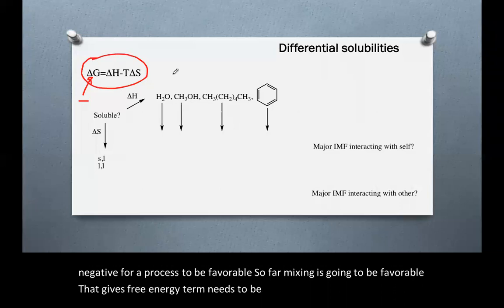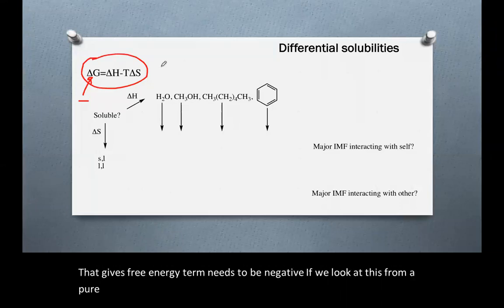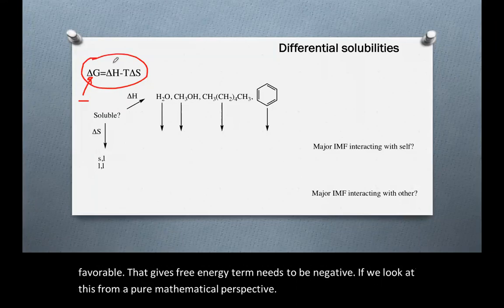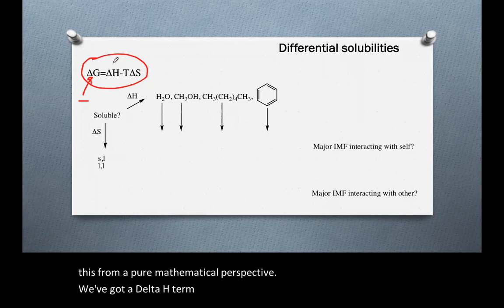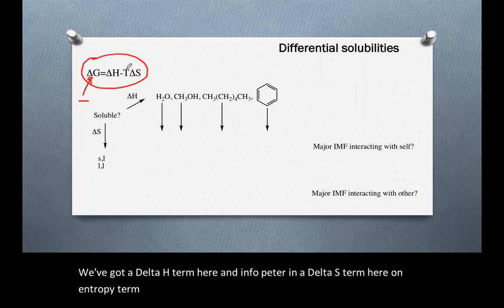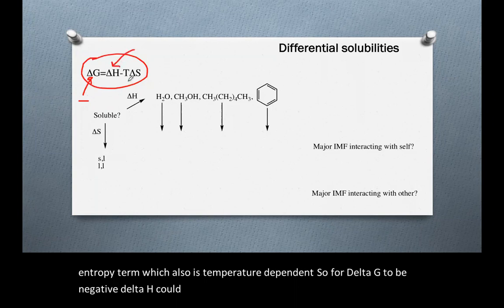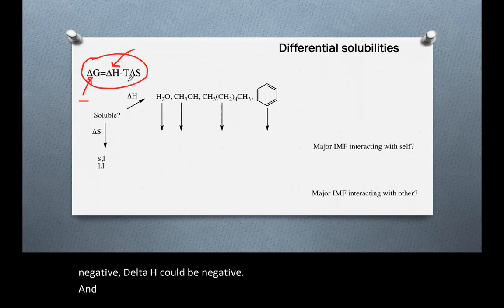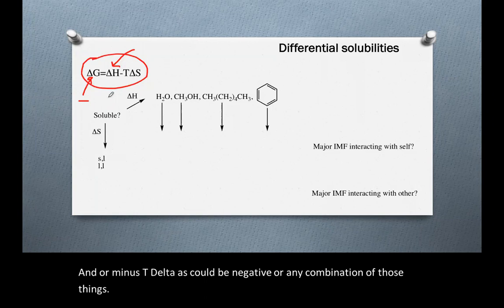Looking at this from a mathematical perspective, we've got a delta H term — an enthalpy term — and a delta S term — an entropy term — which is also temperature dependent. For delta G to be negative, delta H could be negative, and/or minus T delta S could be negative, or any combination of those things.